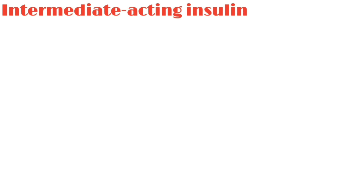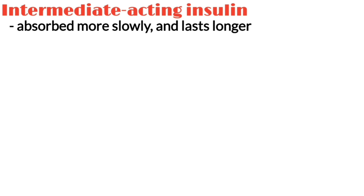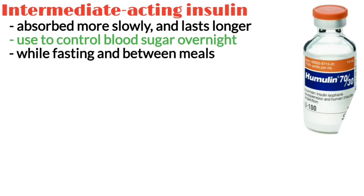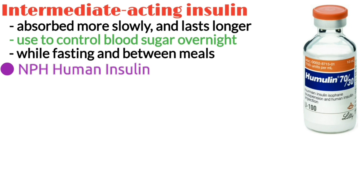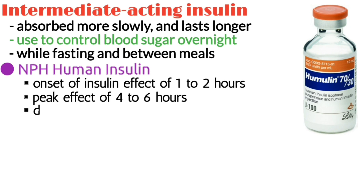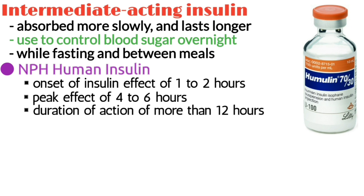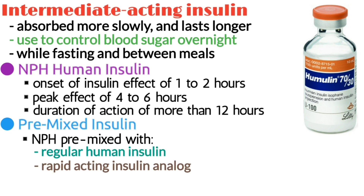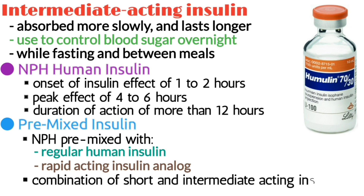Intermediate-acting insulin is absorbed more slowly and lasts longer. It is used to control blood sugar overnight while fasting and between meals. It includes NPH human insulin — neutral protamine hagedorn human insulin — which has an onset of effect of 1–2 hours, a peak effect of 4–6 hours, and duration of action of more than 12 hours. The second is pre-mixed insulin, which is NPH pre-mixed with either regular human insulin or a rapid-acting insulin analog. The insulin action profile is a combination of the short and intermediate-acting insulins.